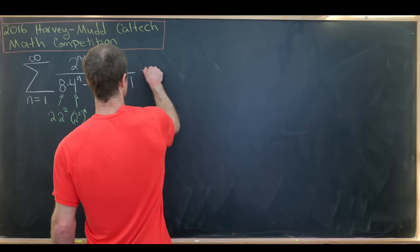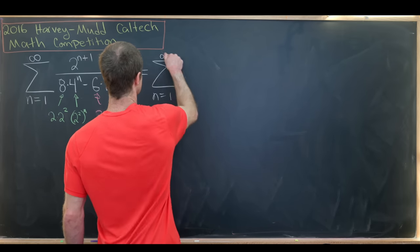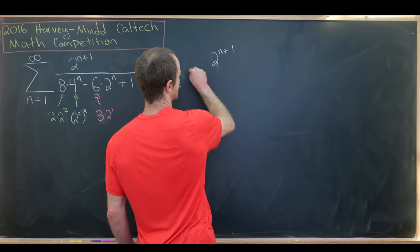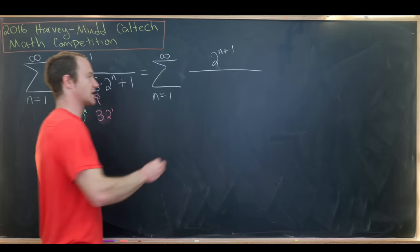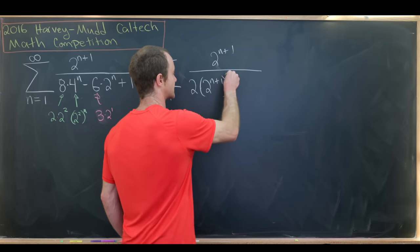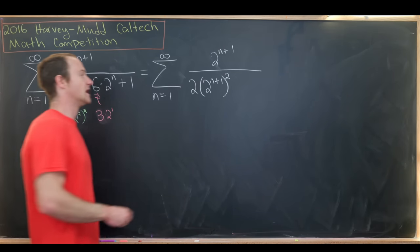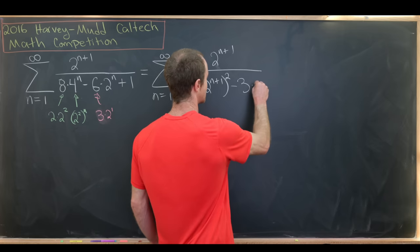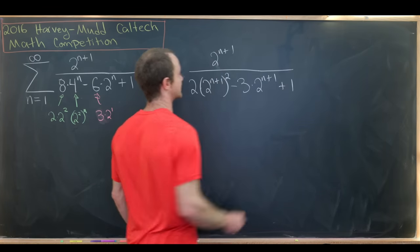Okay, so let's write out what we actually have. So this is going to be the sum as n goes from 1 to infinity, my 2^(n+1) is still in the numerator, and in the denominator I can write 2 times (2^(n+1))^2. So that would be like this first term right here. I can push this 2^2 together with this (2^2)^n, and next I have minus 3 times 2^(n+1) and then finally plus 1.